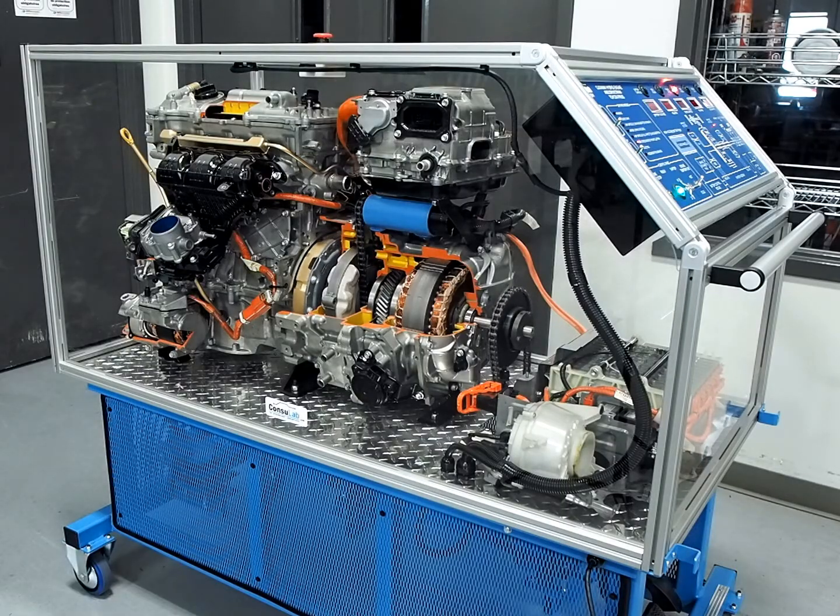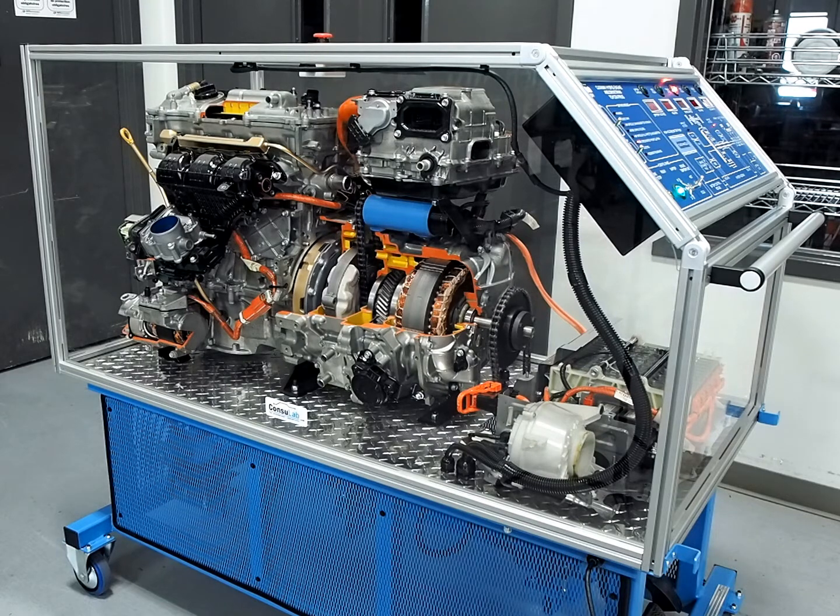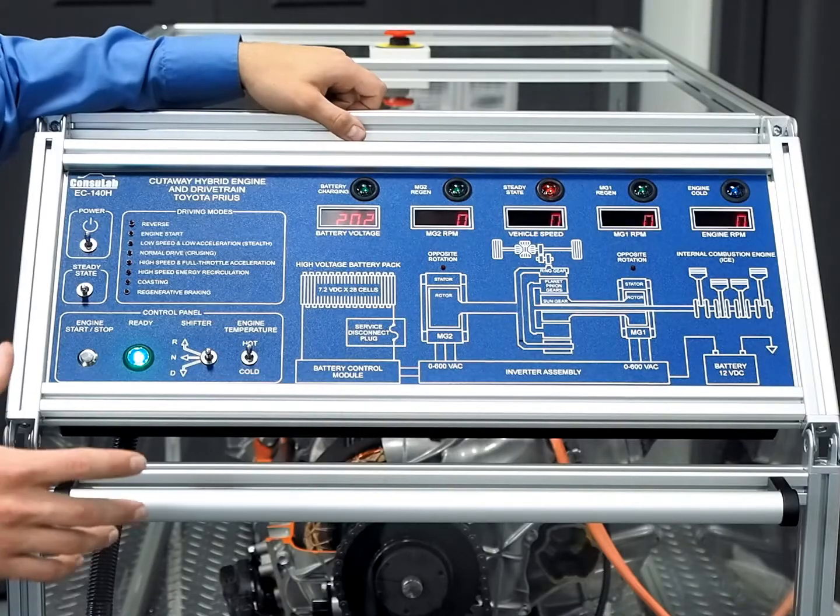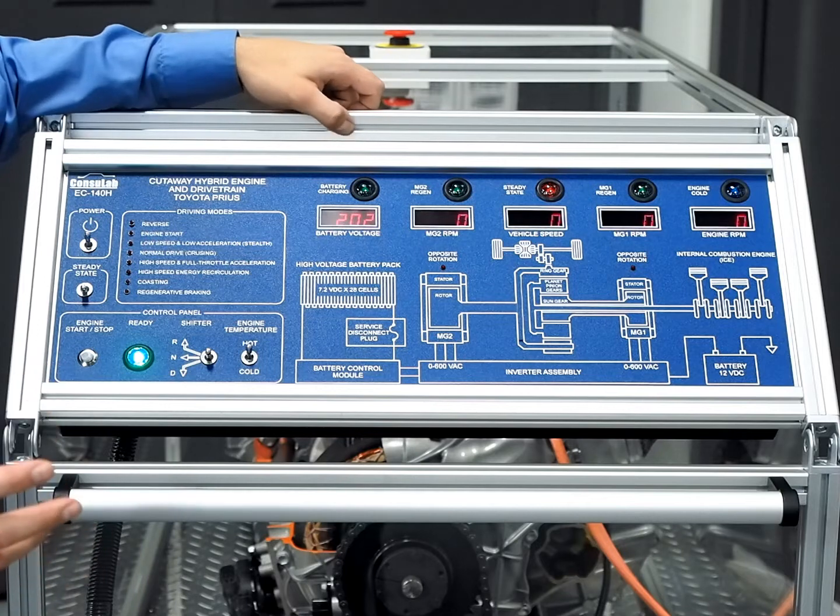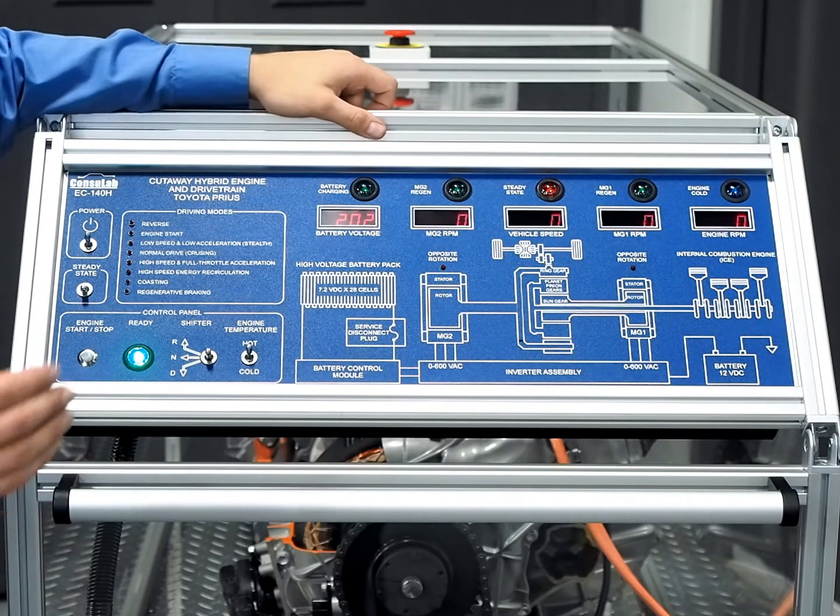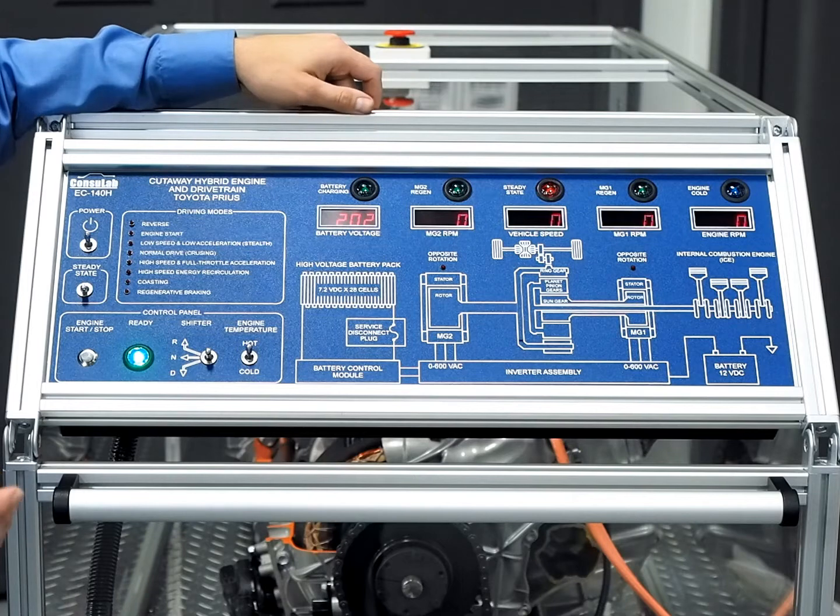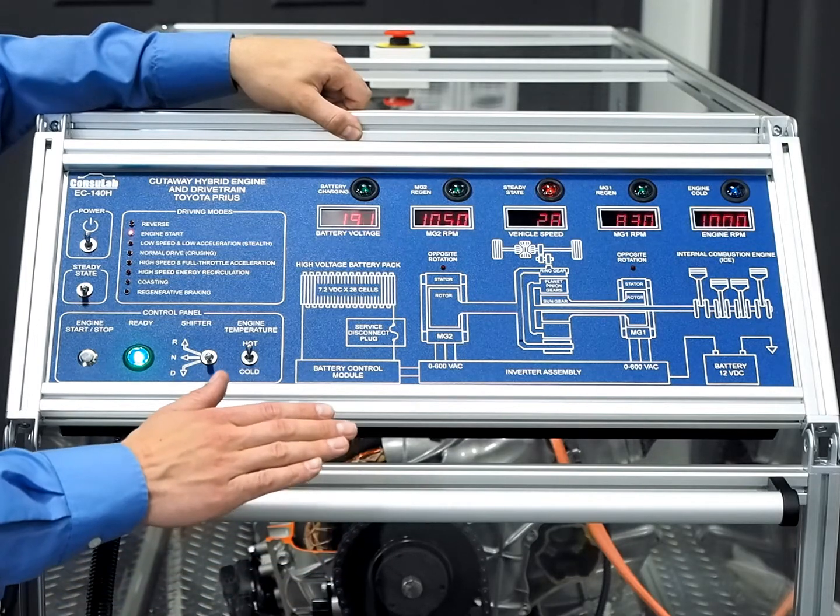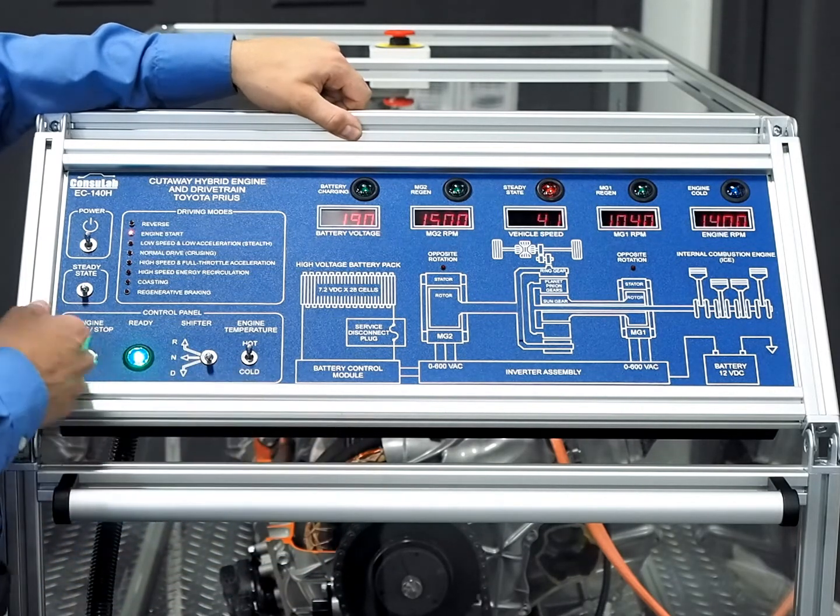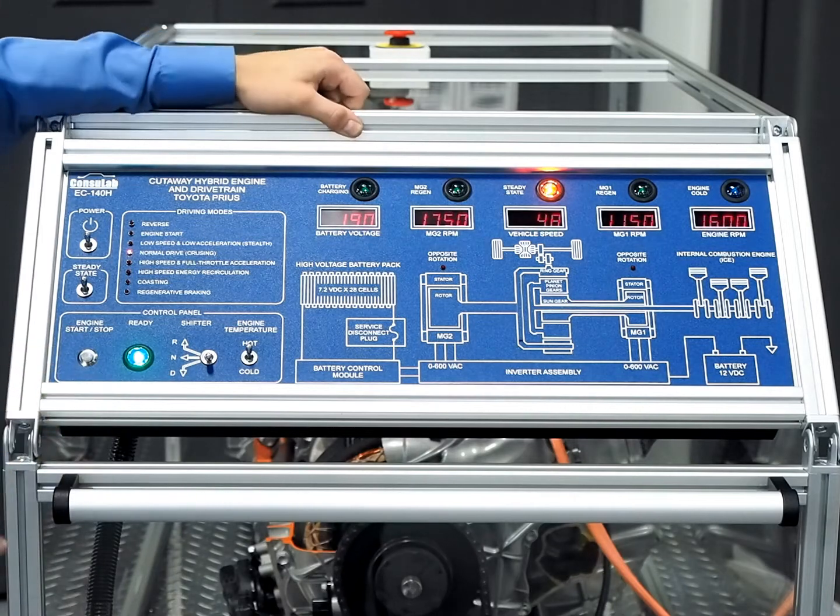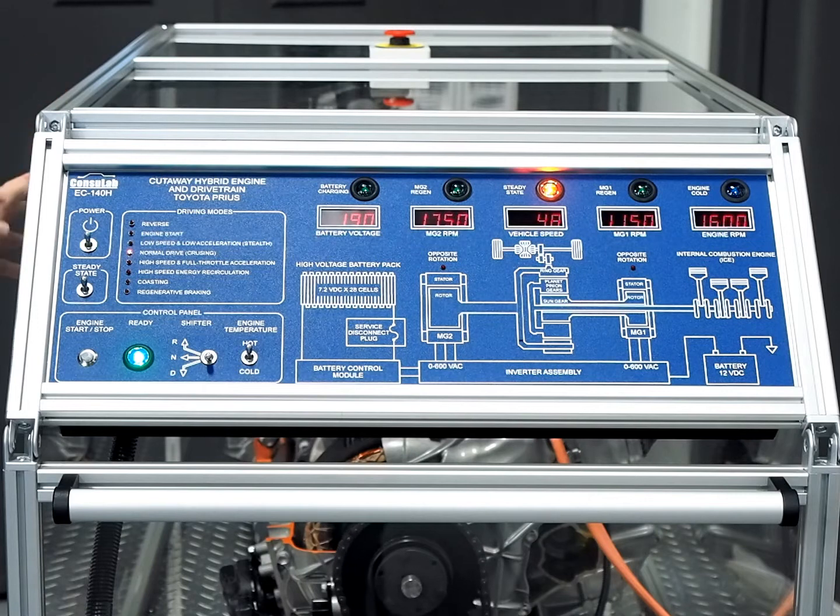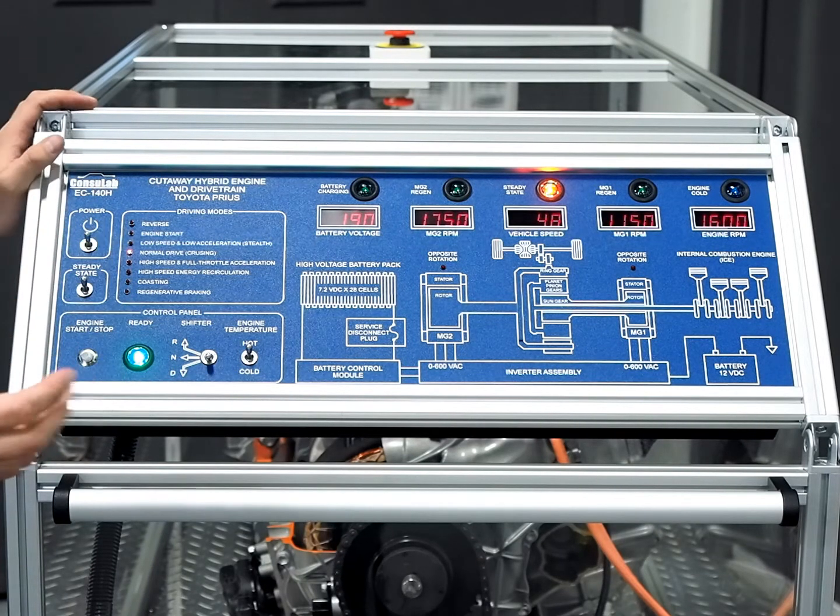As we do a demonstration of all the different driving modes, your students can watch as the internal combustion engine, MG1, and MG2 rotate at different speeds and in different directions. Now some of the drive modes are very difficult to demonstrate even when driving the vehicle because they happen for short durations. So what we did is when you're engaging different drive modes, if you see one that you want to explain to your students in depth, all you have to do is press on the steady state button and it locks in all the speeds, all the values, and the engine and motors will continue to turn at the same speed while you do the explanation for your students.